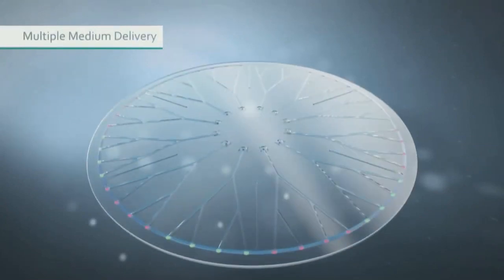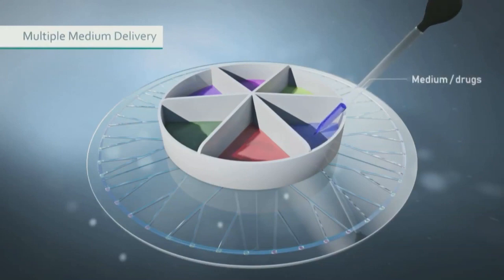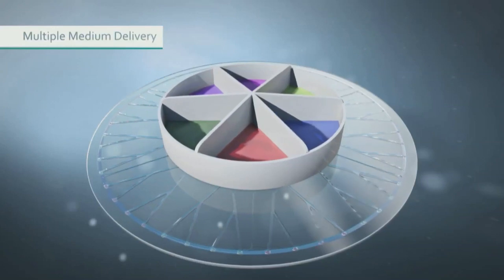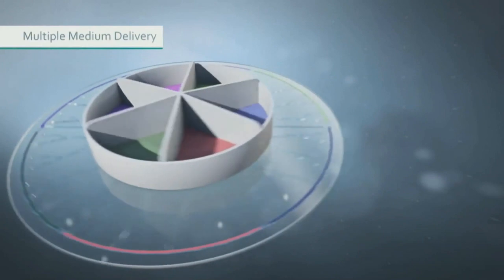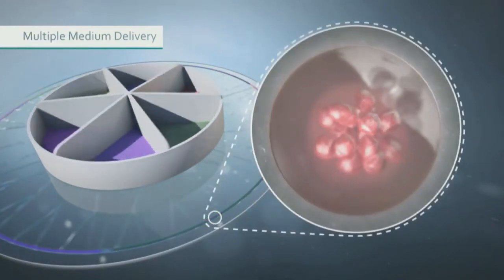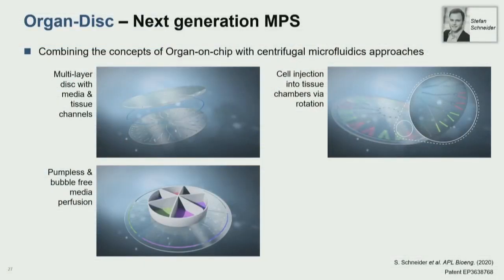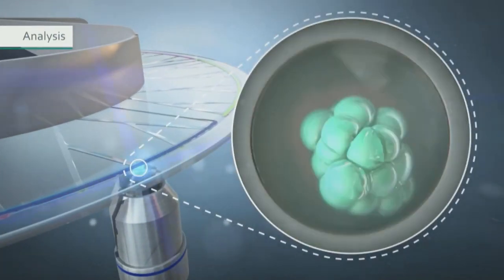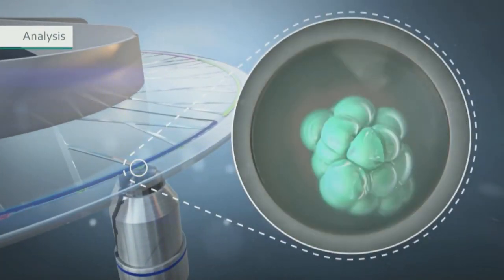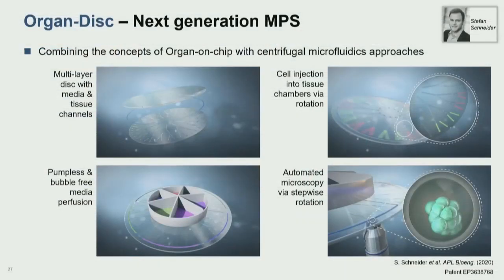The same concept works for media perfusion: we add a reservoir to the center with fresh media and raised reservoirs on the outside, then start a slow rotation of the disc. This drives media from the inside through the media channels to the outside, perfusing all tissues simultaneously without any external pump. The symmetry of the system also allows us to use just one readout — one microscope or optical fiber — and sequentially rotate the disc to image all individual tissues one after another.